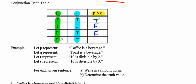In the last line, both P and Q are false. Since a conjunction requires both statements to be true, and that's not the case here, the conjunction is false.